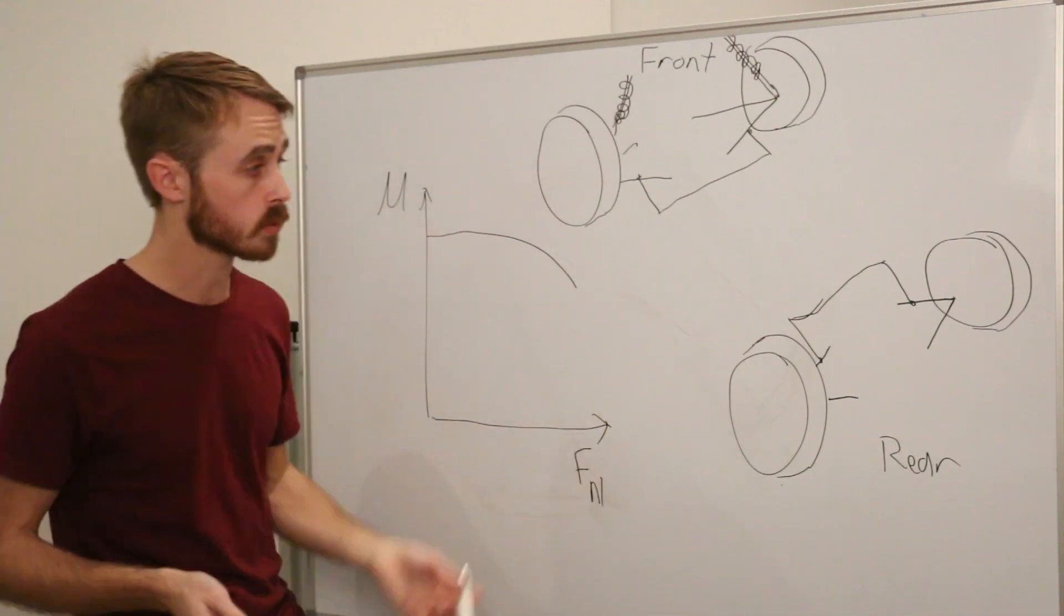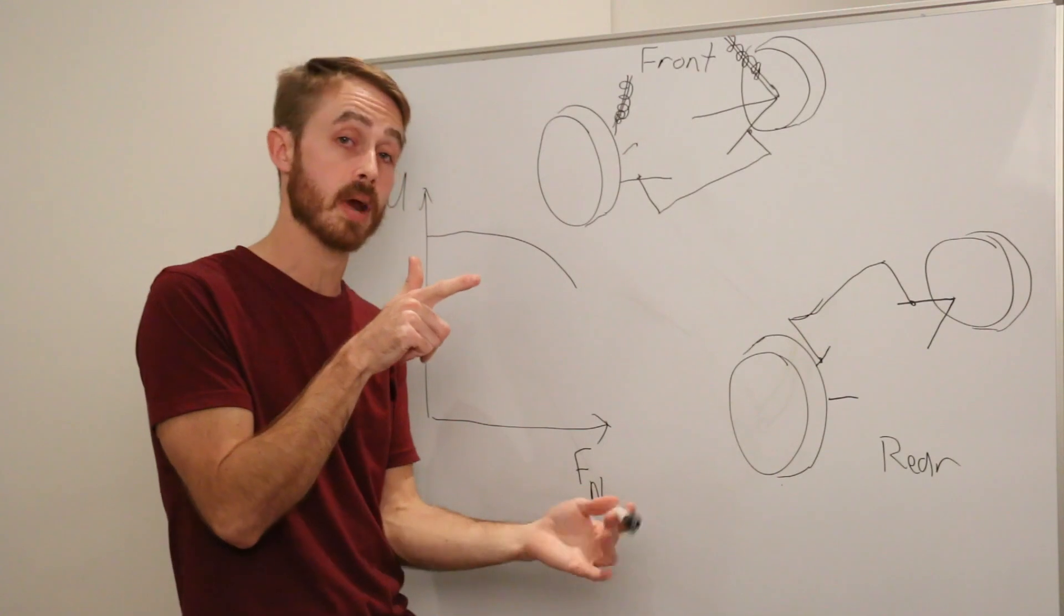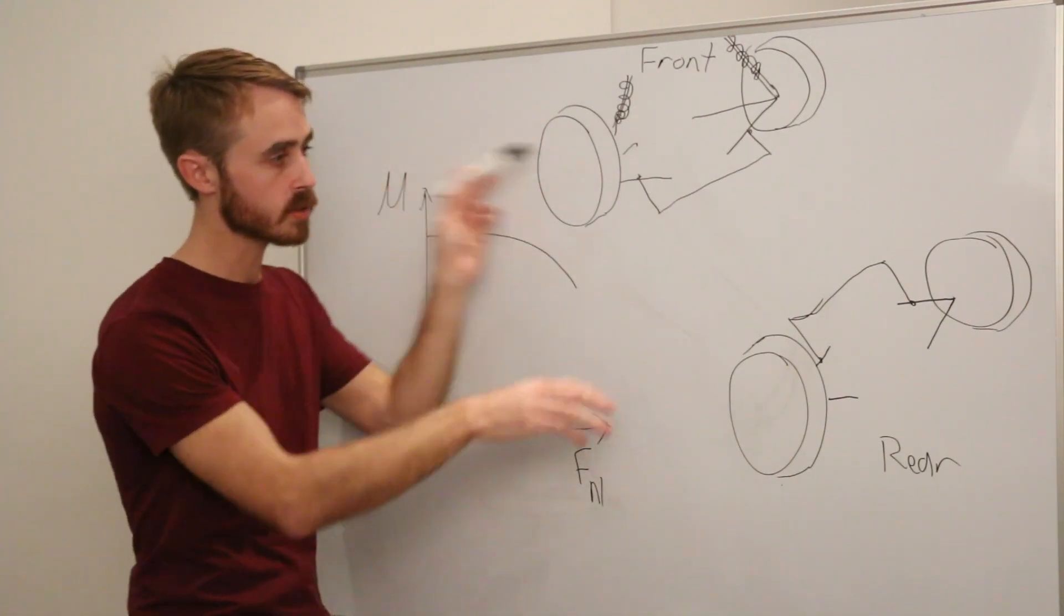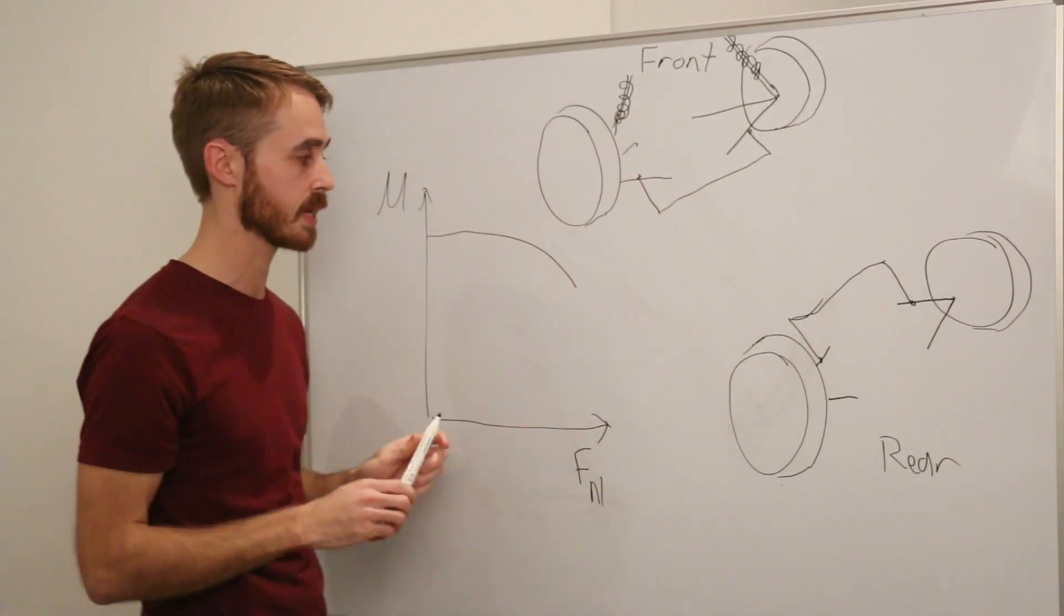Of course whenever a vehicle goes through a corner it will undergo some degree of weight transfer as its centre of gravity is above the ground or where its tyre contact patch is. So this weight transfer will cause an increased load on the outside tyres and a decreased load on the inside tyres.